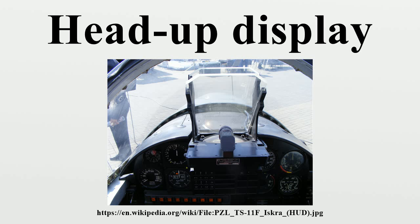HUDs are split into four generations reflecting the technology used to generate the images. First generation HUDs use a CRT to generate an image on a phosphor screen, having the disadvantage of the phosphor screen coating degrading over time. The majority of HUDs in operation today are of this type. Second generation HUDs use a solid-state light source, for example an LED, which is modulated by an LCD screen to display an image. These systems do not fade or require the high voltages of first-generation systems.